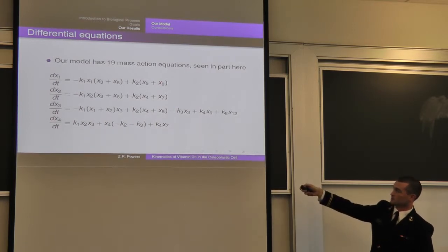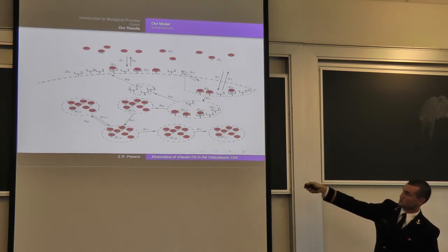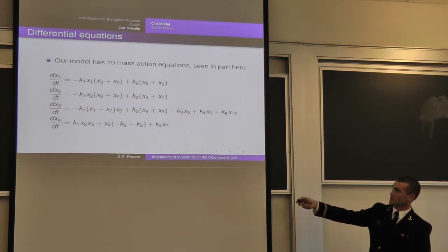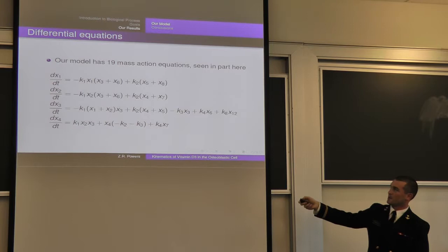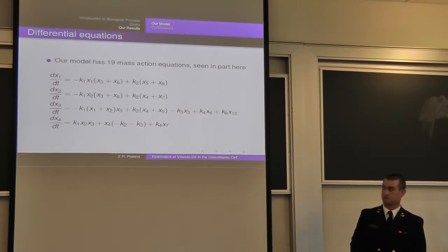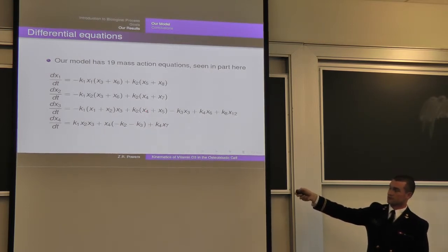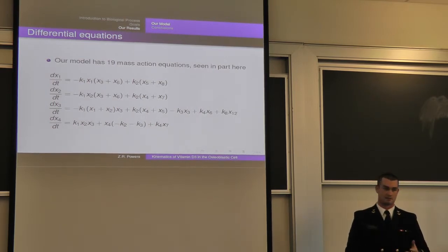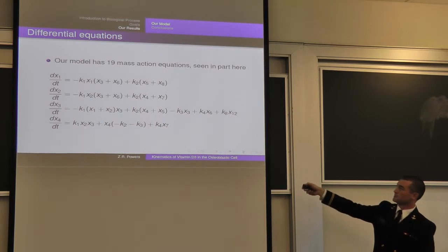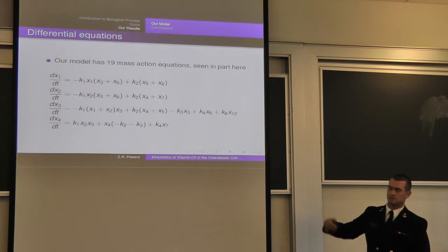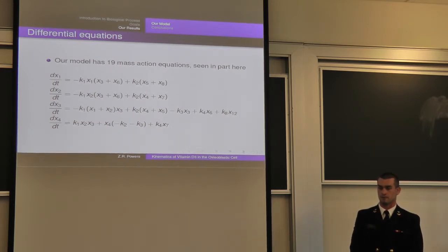You can see how this process works through each equation. For example, X3, which is the amount of empty receptors in the buffer region, goes down with respect to the amount of free D-binding protein in the serum as well as the bound DBP in the serum times the concentration of empty buffer receptors, and increases with the same rate constants where occupied receptors release the D-binding protein. And this is the process where the receptors on the buffer will transform into coated pits before invagination. So even if X1 equals zero, it doesn't stay zero if you've got some X5 and X8.